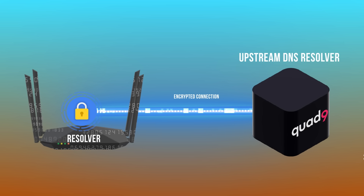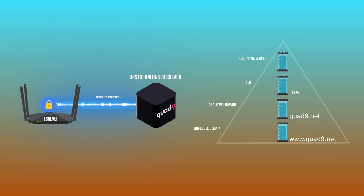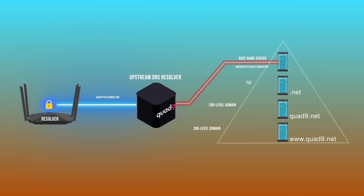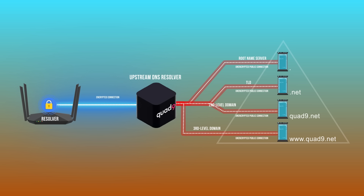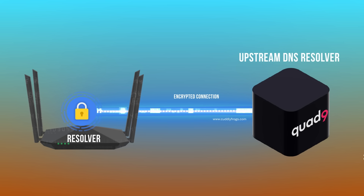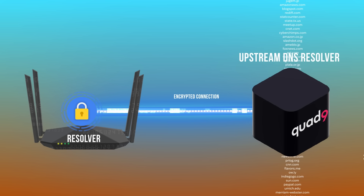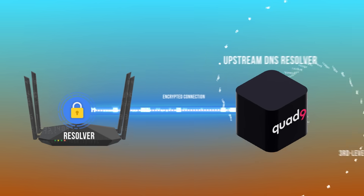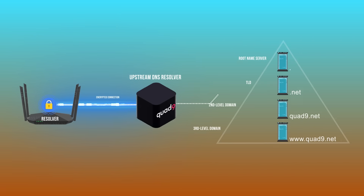So using an upstream resolver like Quad9 has huge privacy benefits. Now as mentioned, it's not possible to encrypt the second part of this journey that goes from Quad9 to the authoritative servers. So what Quad9 does is, once they receive your DNS query, they mix that query in with all the other millions of people that are making queries at that moment in time, and then send that out in an unencrypted fashion to all the different authoritative servers on the internet, get answers, and give it back to you. So anybody observing even past their system can't tell what queries you're doing.